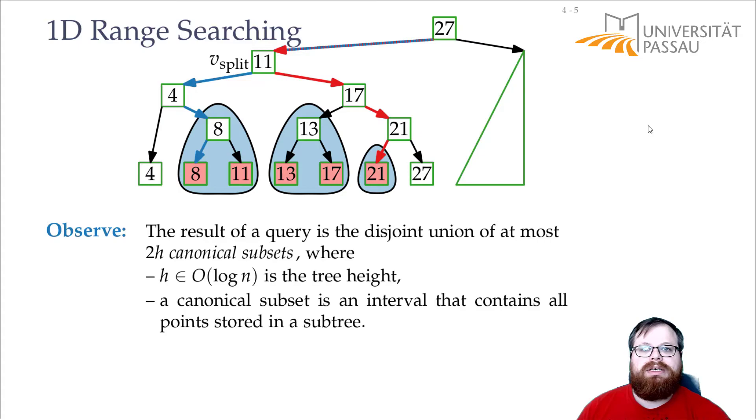First, how much time do we need to create this data structure? It's a balanced binary search tree, so we can do it in order of n log n time. And what is the space of the data structure? We have n elements that gives us n leaves. And it's a binary tree where we don't have any degree two vertices. So the number of internal vertices is at most n minus one.